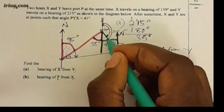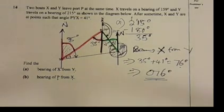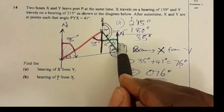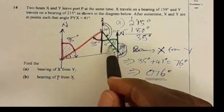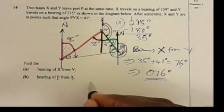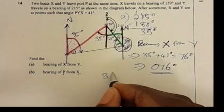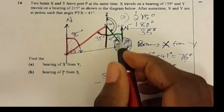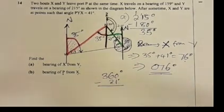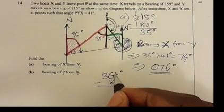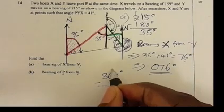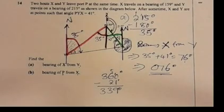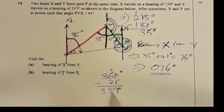This angle and the alternate angle are equal, so that angle is 21 degrees. To find the bearing of P from X, we measure from the north clockwise to the line connecting P and X. That gives 360 degrees minus 21 degrees, which equals 339 degrees.